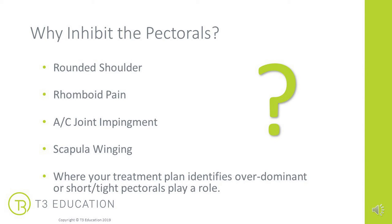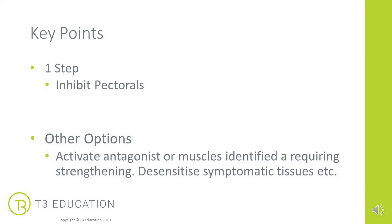As always, be the detective — find out what your intention is, and if inhibiting that muscle is complementary to what you're trying to achieve in your treatment plan, this is a really simple and effective taping. It's a one-step taping to inhibit the pectorals. Here I'm specifically targeting pec minor and some of the lower fibers of pec major, as this client's shoulder is really locked down with some winging at the back.